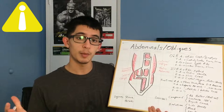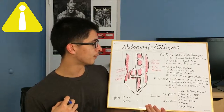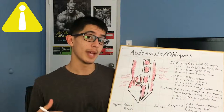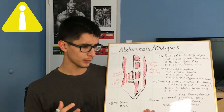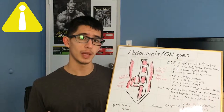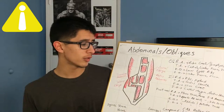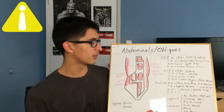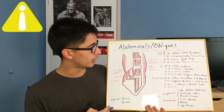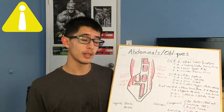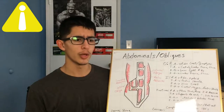The internal oblique originates on the lumbar fascia and the ilium — the lumbar being your lower back essentially, and the fascia being the connective tissue or protective layer over the lower back muscle. It inserts into the costal margin and the rectus sheath — pretty much in the lower rib area and also into the connective tissue on the abdominals.